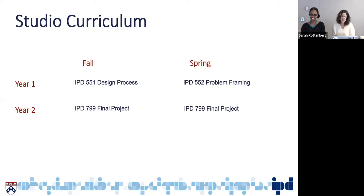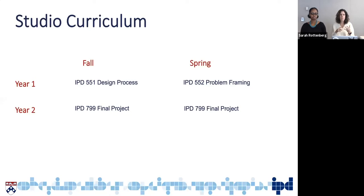The core of the curriculum is really the studio curriculum. In year one in the fall, there's a class called Design Process, which is about getting you to think differently about how you approach problem solving and creativity and how that manifests in physical form. You're doing a lot of designing, building, prototyping, and making. It's really about starting to think strategically about how to generate new ideas, implement those ideas successfully, and pay attention to things like material, form, and craft.